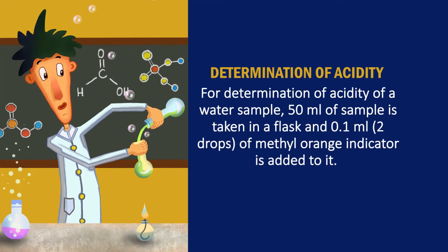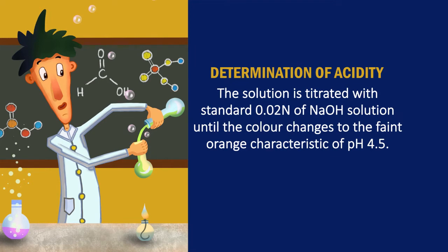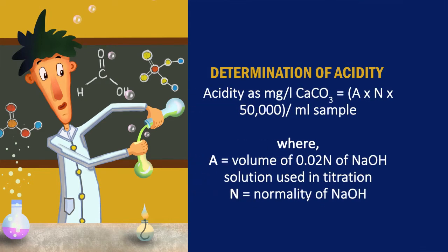Determination of acidity: for determination of acidity of a water sample, 50 ml of sample is taken in a flask and 0.1 ml of methyl orange indicator is added. The solution is titrated with standard 0.02 N NaOH solution until the color changes to faint orange, characteristic of pH 4.5. Acidity in mg per liter in terms of calcium carbonate equals A into N into 50,000 divided by the sample size, where A is the volume of 0.02 N NaOH solution used and N is its normality.